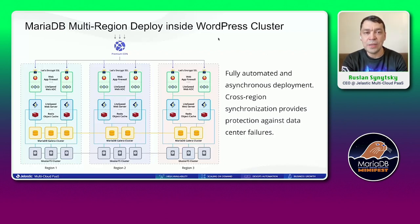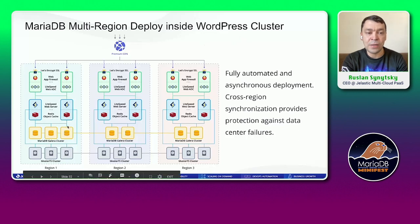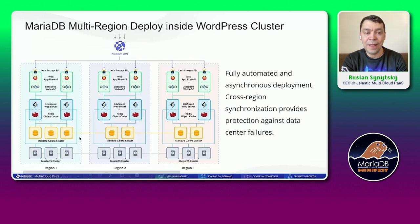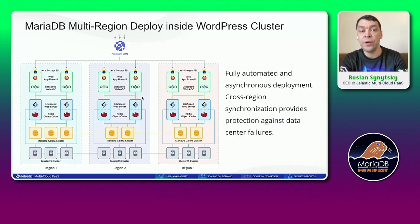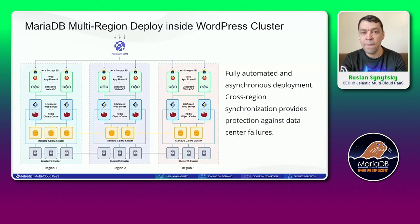For example, here you can see multi-region deployment of WordPress clusters. We deploy a WordPress cluster — which includes a MariaDB Galera cluster inside — into three different regions, then configure synchronization and replication between the Galera DB instances across all regions. If one region goes down, your application will keep handling requests. In Jelastic, such complexity is hidden behind a one-click button — you just choose the package, choose the regions, press deploy, and enjoy it.